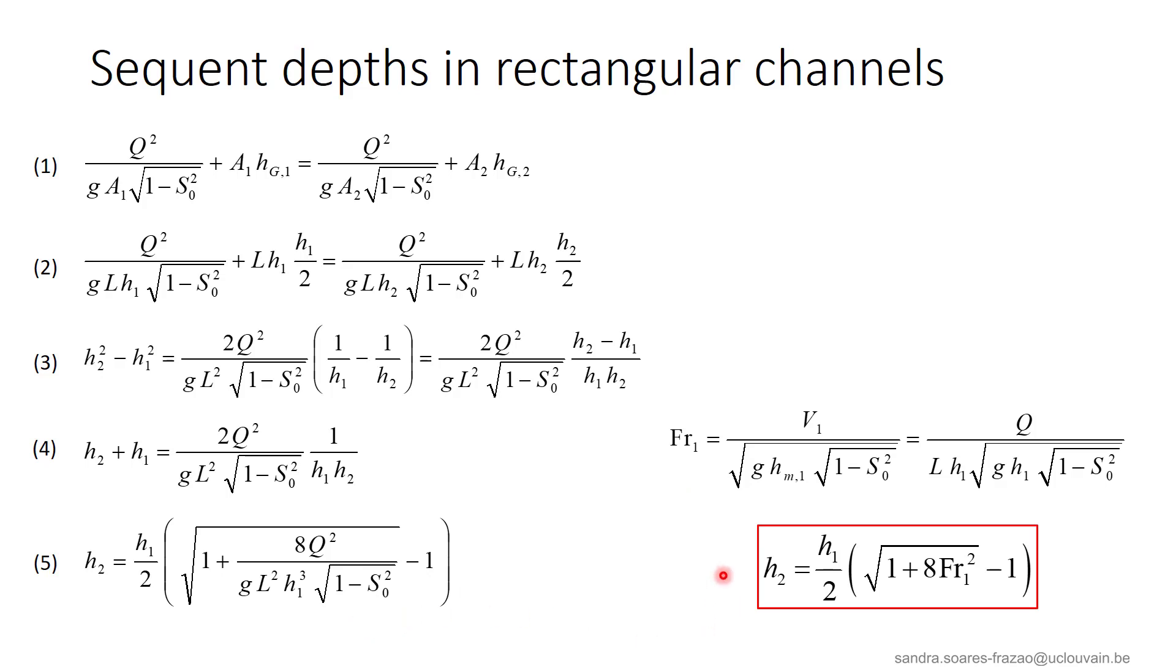we obtain finally this equation for h2. So we see that in the case of a rectangular cross section, the sequent depth h2 can be calculated directly, without any iterations.